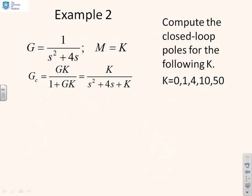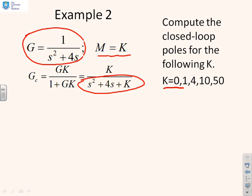Next example then. Here we've got a quadratic system: G equals 1 over s squared plus 4s. We'll let the compensator again just be K. So for this one if I calculate the closed loop pole polynomial, it's s squared plus 4s plus K. I'm going to ask where are the closed loop poles for these different values of K: 0, 1, 4, 10 and 50.